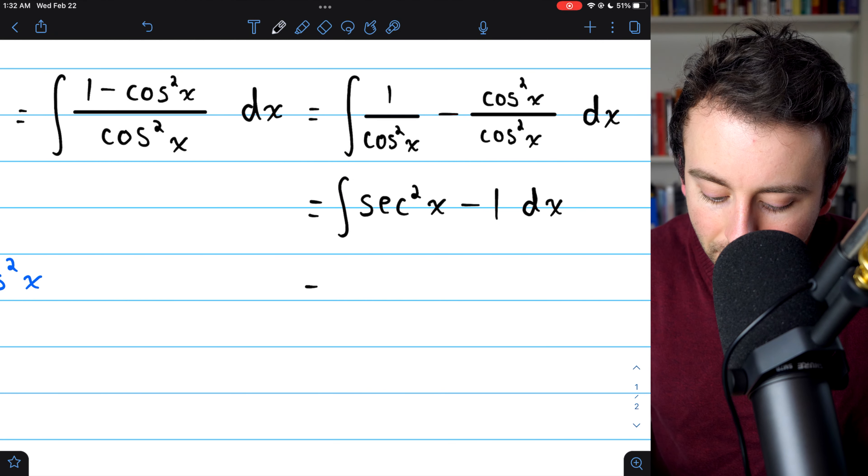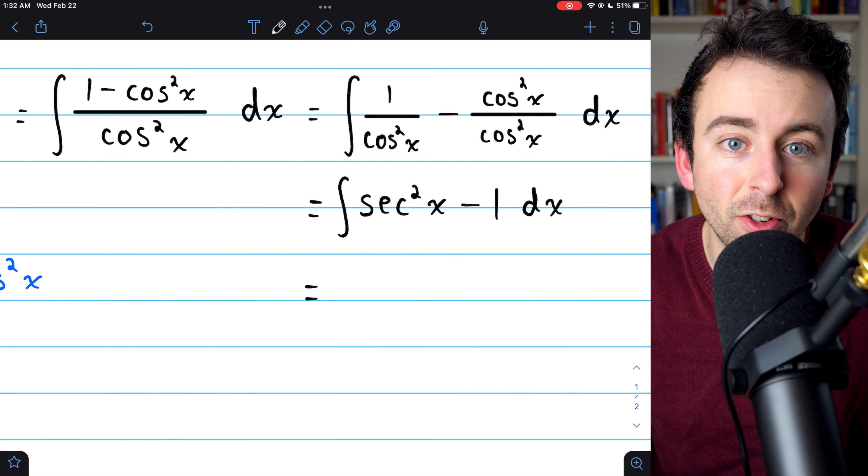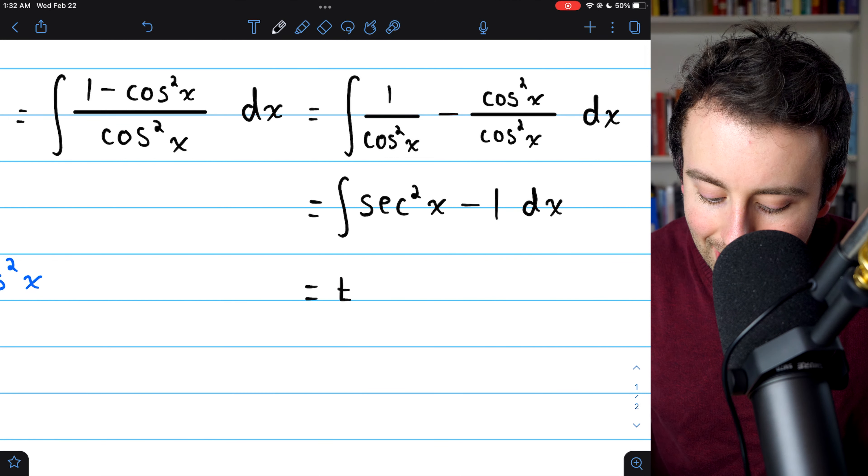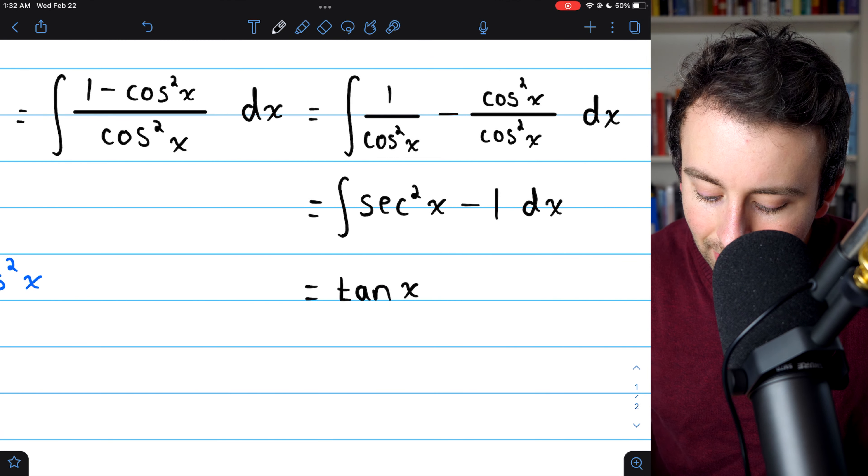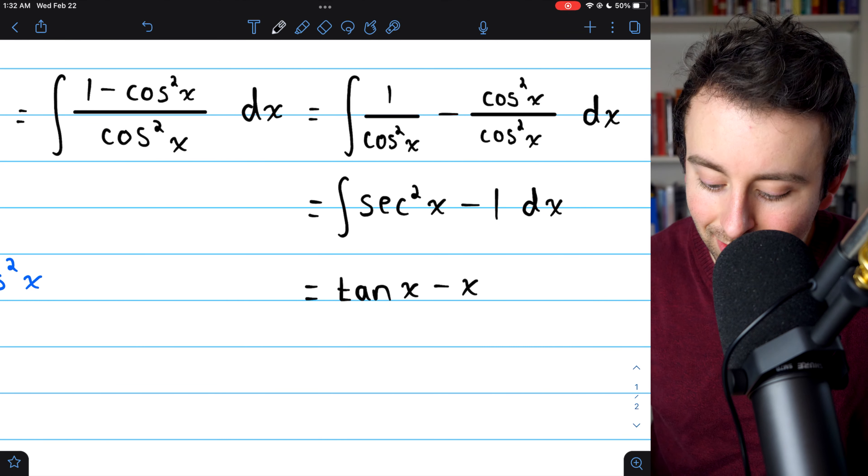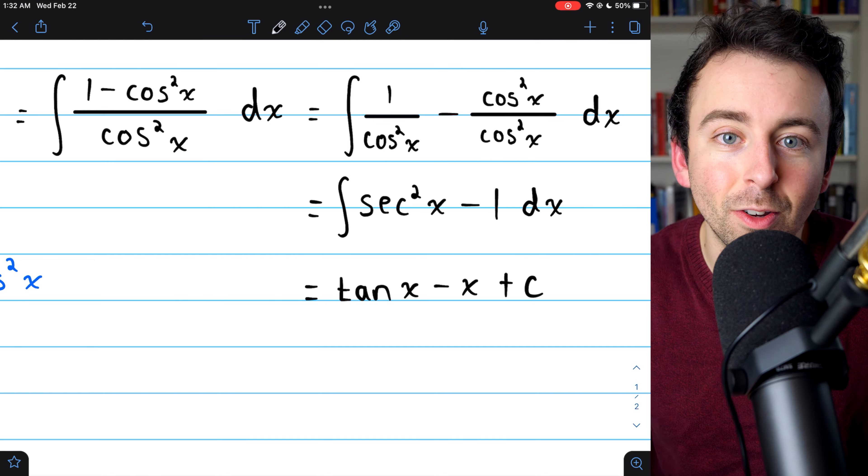And it doesn't get much easier than this. The integral of secant squared is tangent, because tangent's derivative is secant squared. So this integral is tangent of x. And then, of course, the integral of minus one is just minus x. Add on the arbitrary constant, and that is the integral of tangent squared.